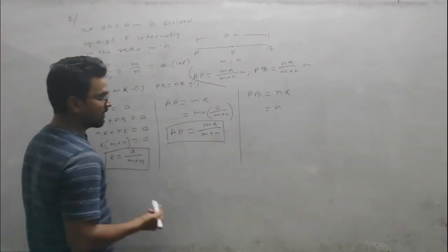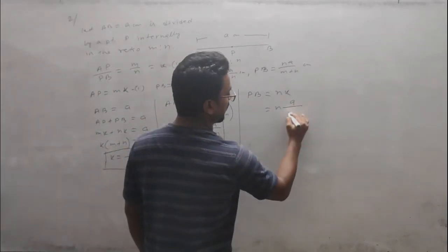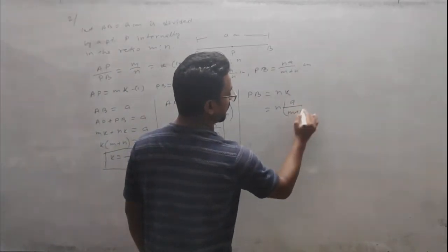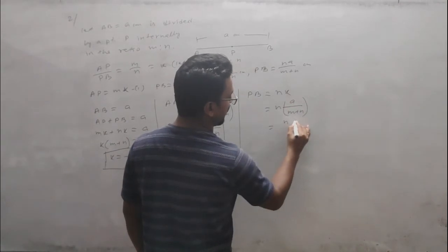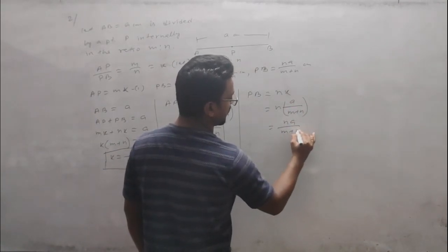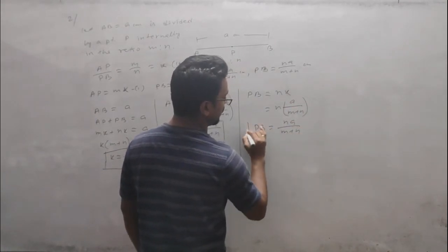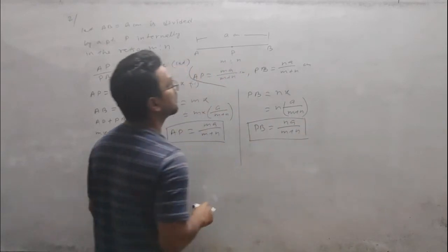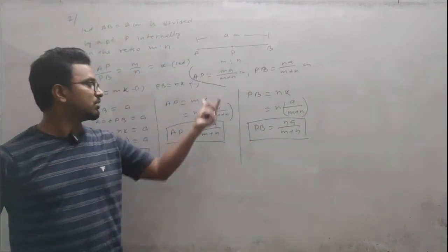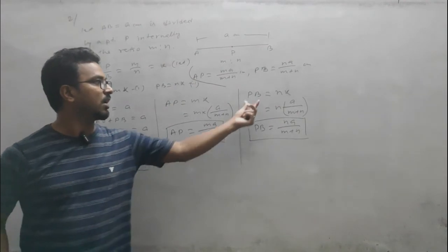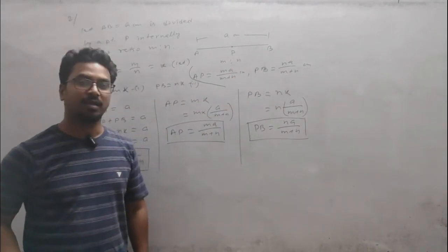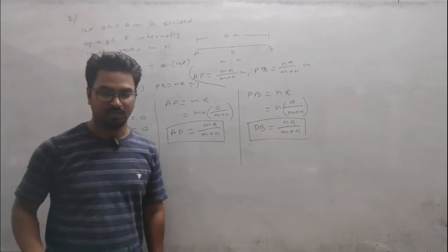Similarly for PB: PB = nk. Substituting k = a/(m+n), we get PB = n × a/(m+n) = na/(m+n). Thus AP = ma/(m+n) and PB = na/(m+n).